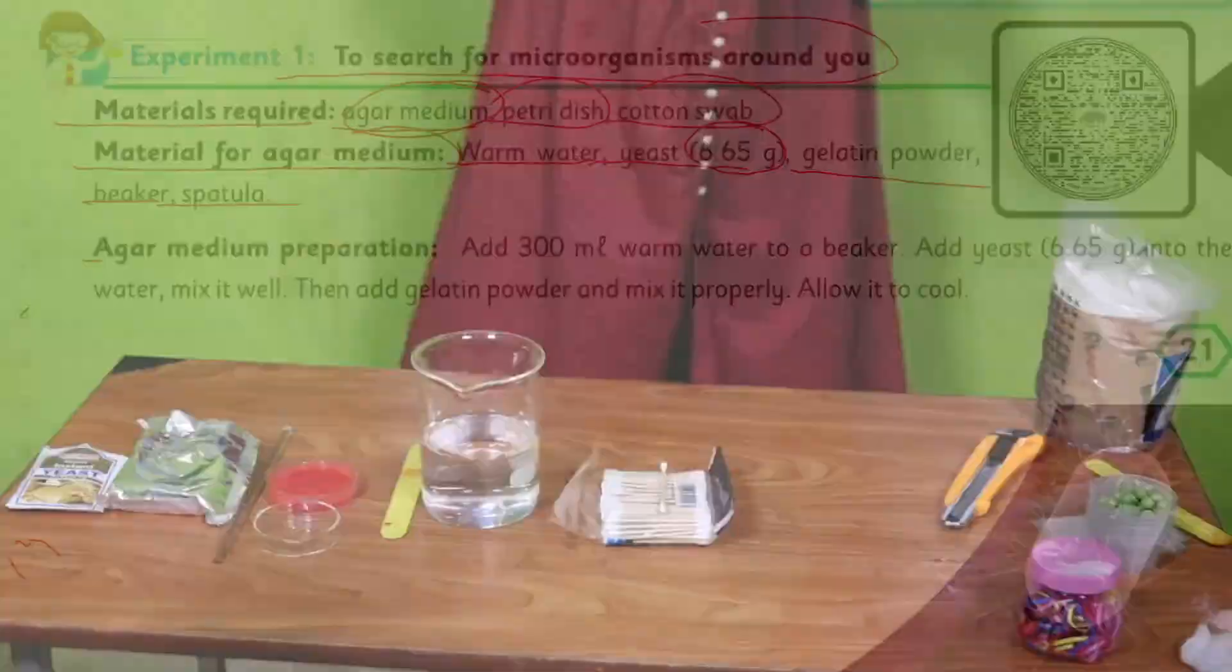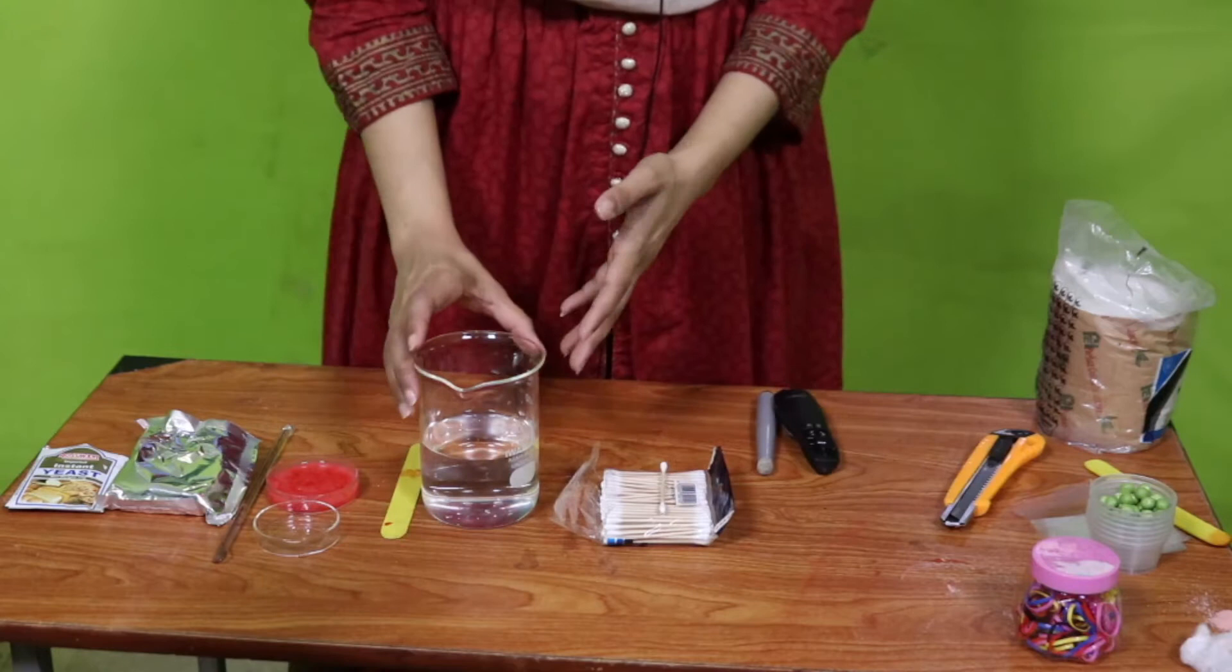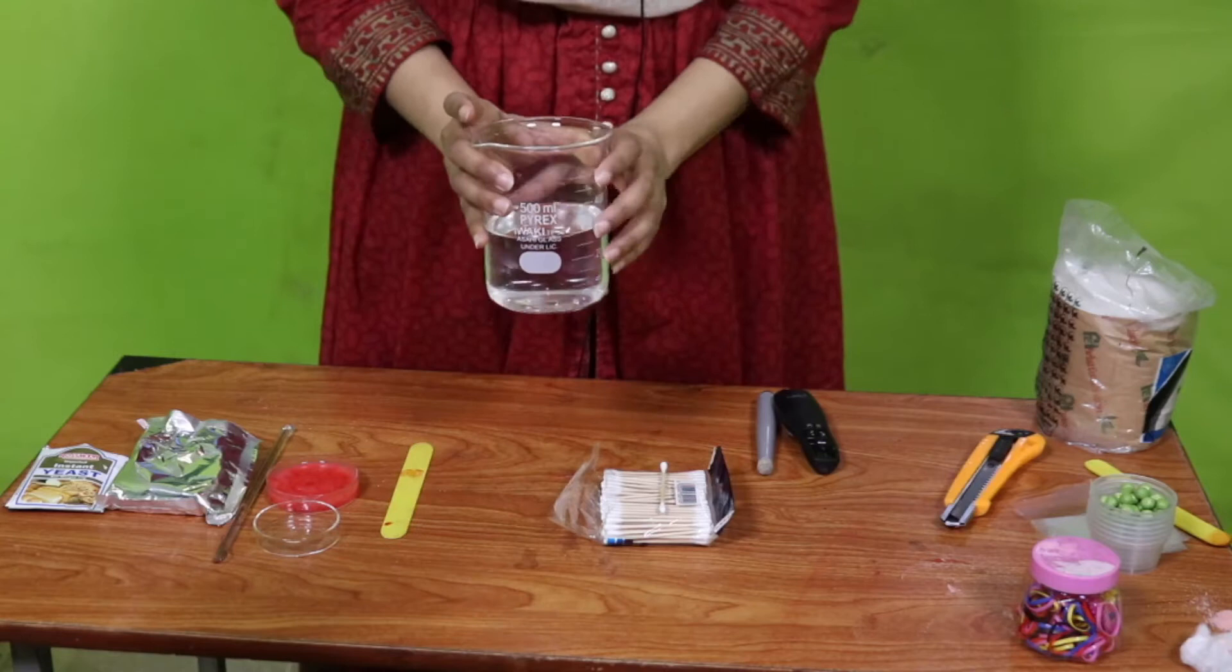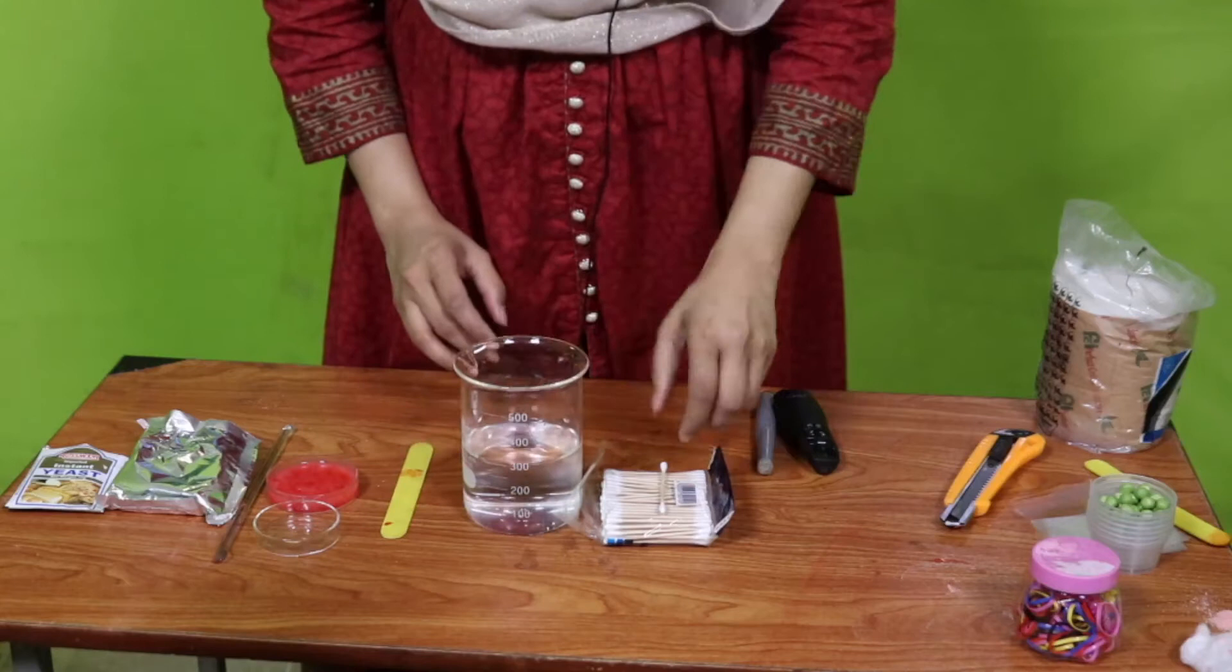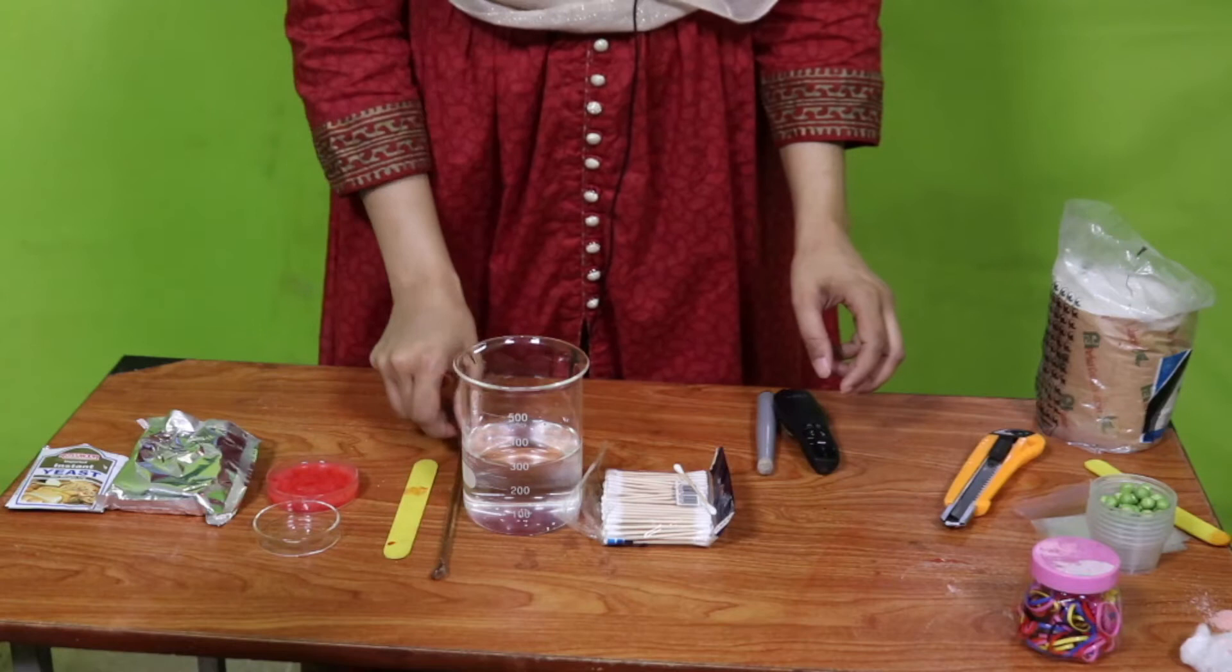First, let's have a look at the material that is required. We need a beaker and we will measure warm water in it, 300 ml. You can see the measurement here, it is 300 ml. Then we need cotton swabs - I am using these cotton buds - and spatula. I have a glass stirrer here for mixing.